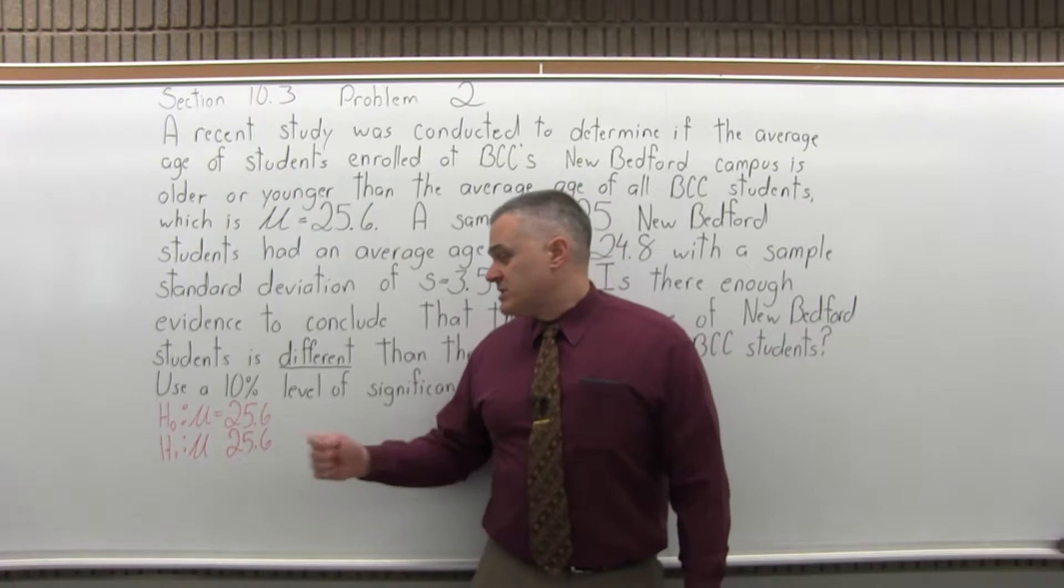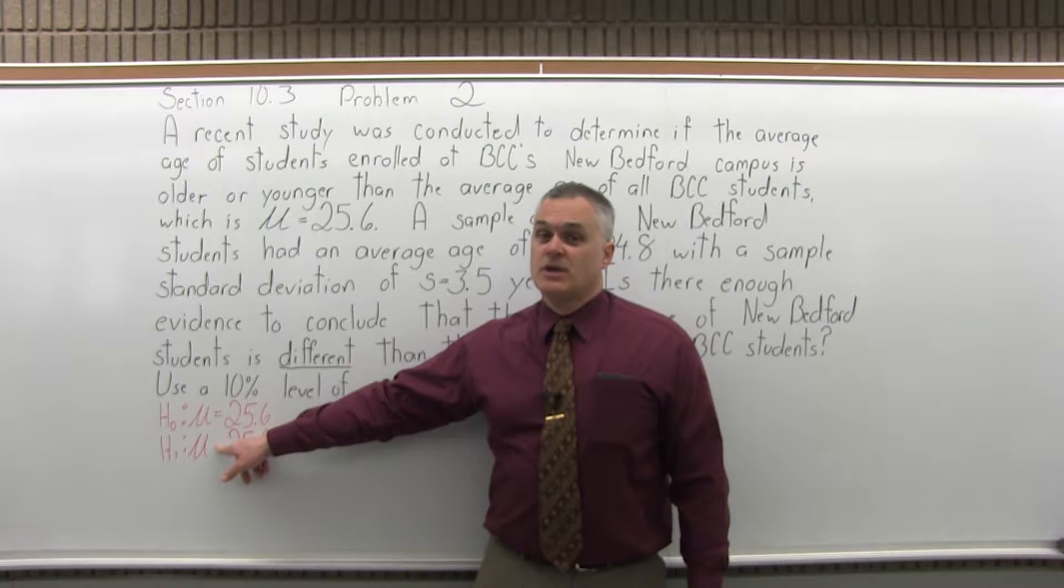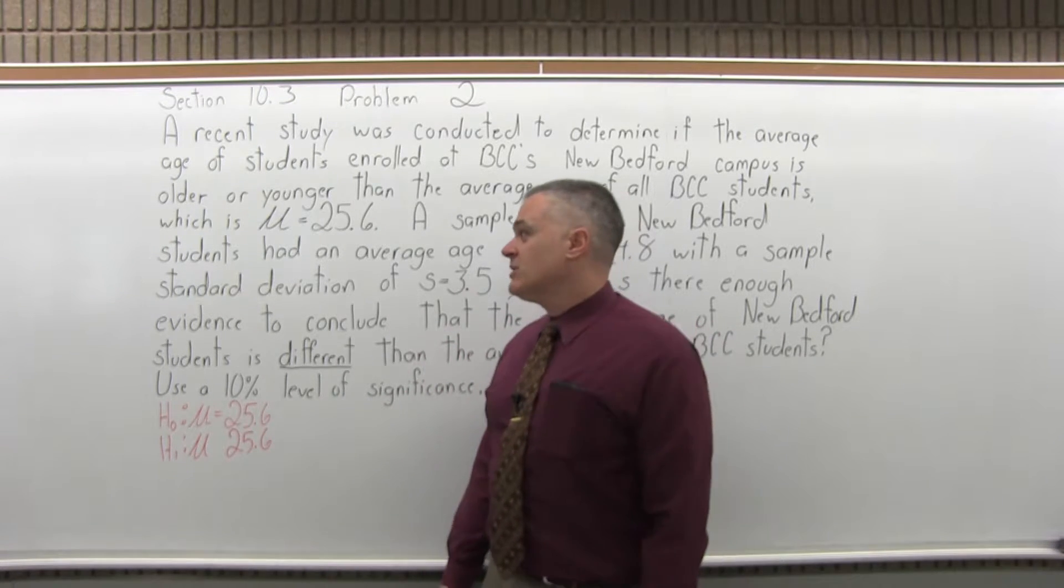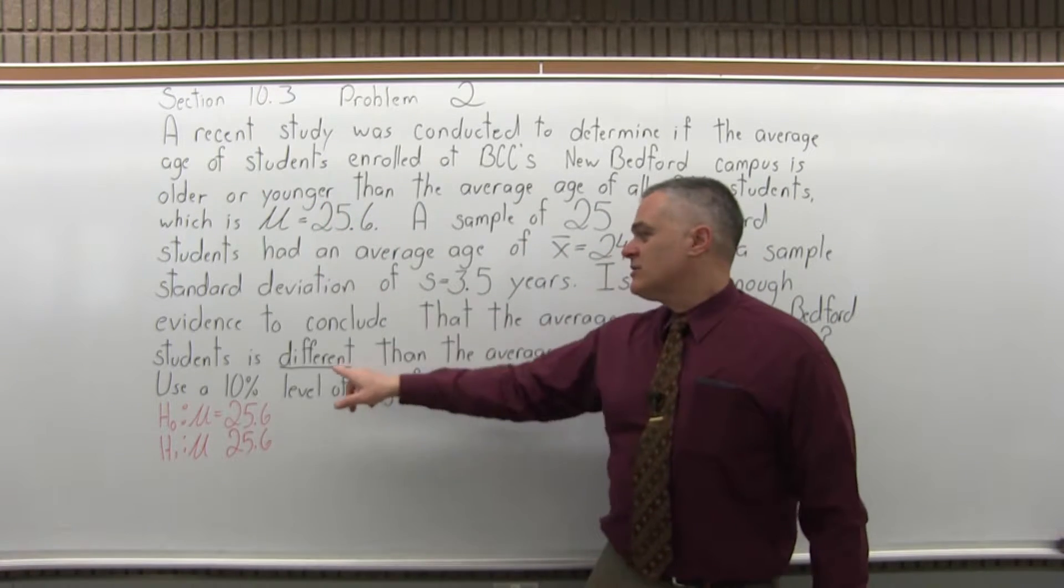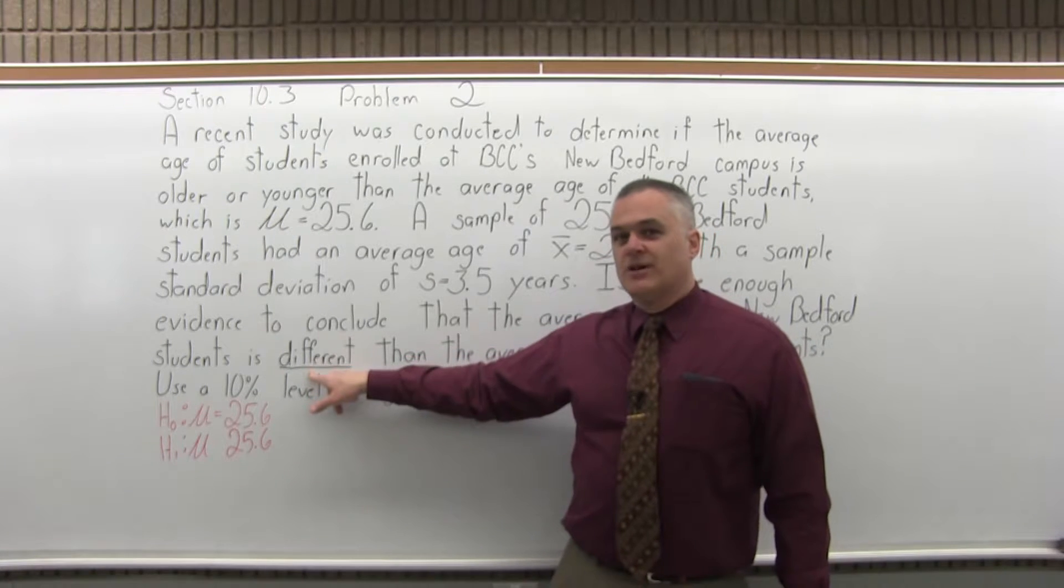So your possible options for the symbol for the alternate hypothesis are just less than, just greater than, or not equal to. So what are we testing here? It winds up being the not equal to, because we want to see if they're younger or older, and also later in the problem it just says see if it's different, and different is underlined.